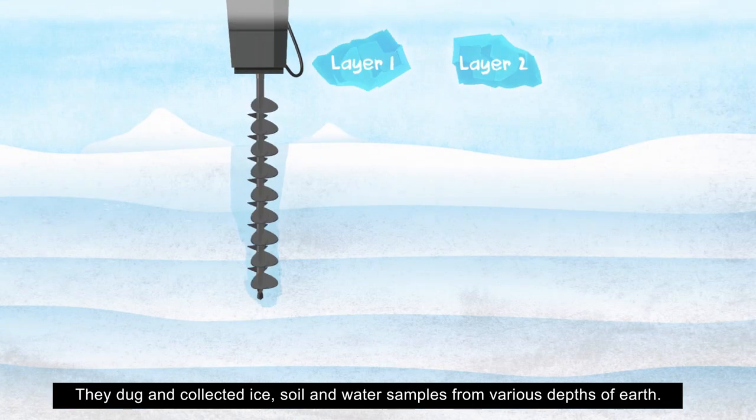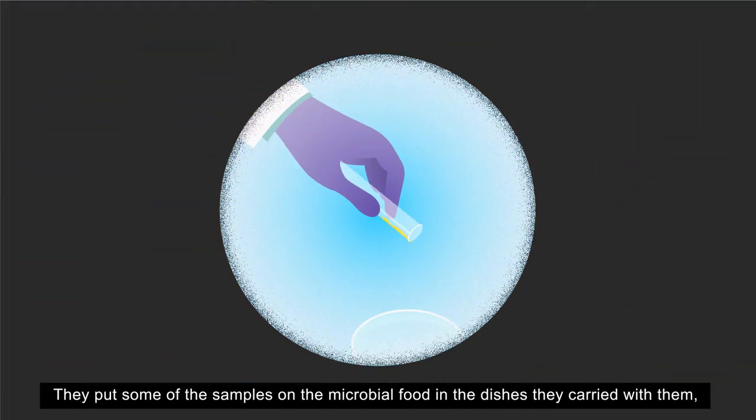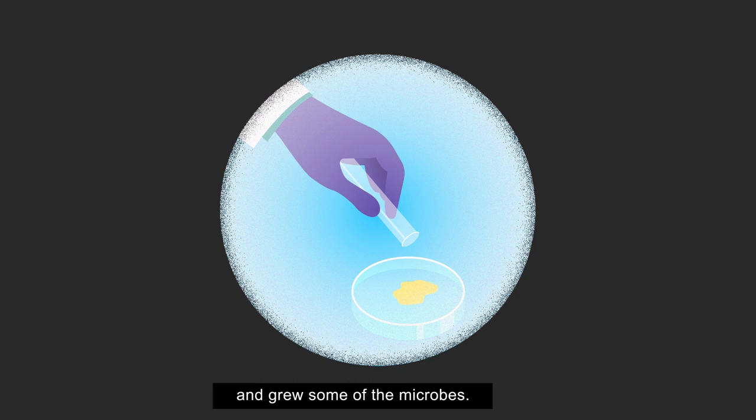They dug and collected ice, soil and water samples from various depths of earth. They put some of the samples on the microbial food in the dishes they carried with them and grew some of the microbes.